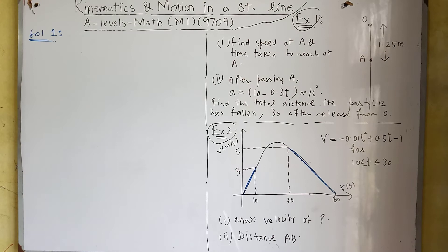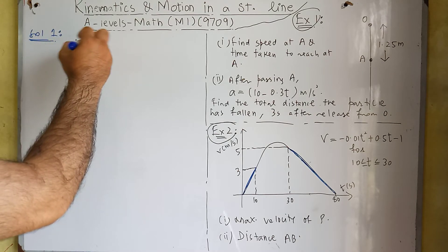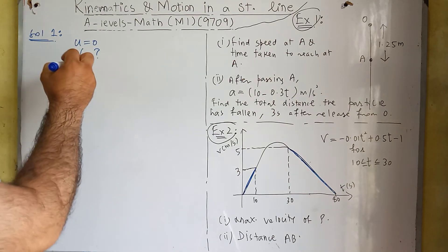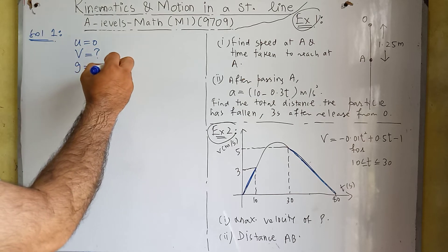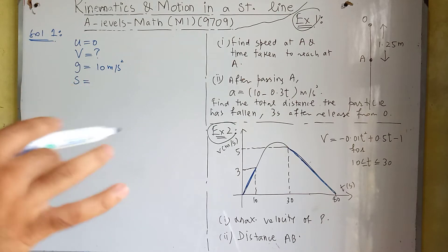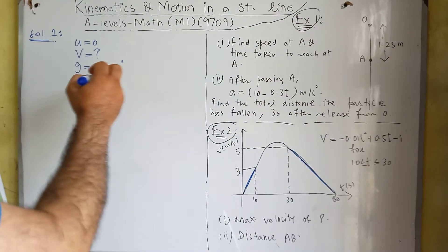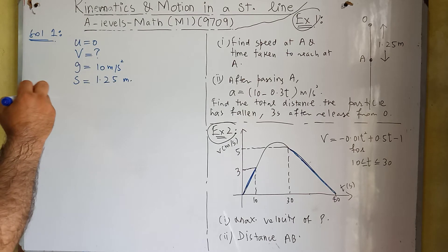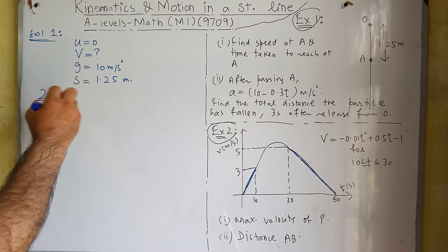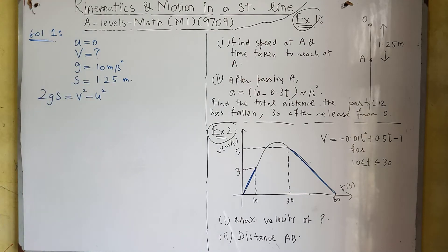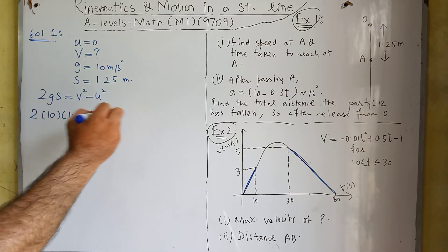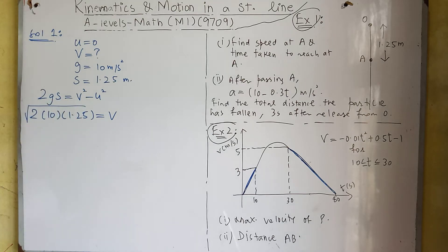The initial velocity of this particle is zero and we need to find the final velocity. Because this particle is coming downward, the gravitational acceleration will be 10 meters per second squared, and the distance between the point of release and point A is 1.25 meters. We know the third equation of motion: 2gs = v² - u².